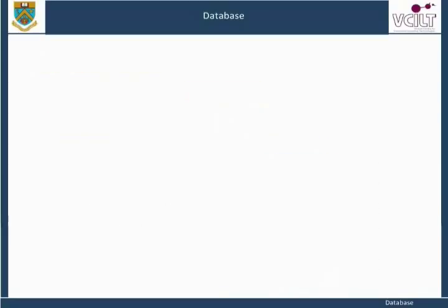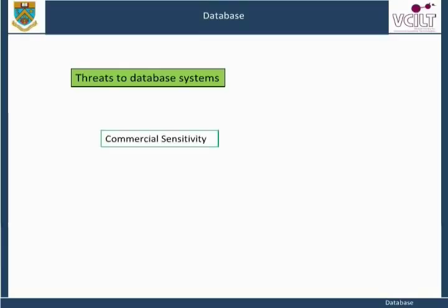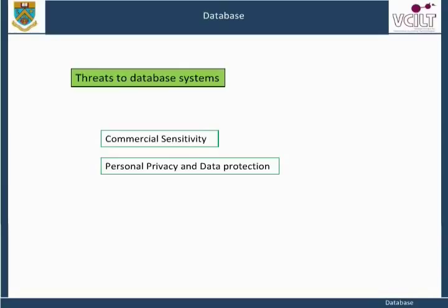This section is an overview of the categories of specific regulatory threats to database systems: namely, commercial sensitivity, personal privacy and data protection, computer misuse, and audit requirements.